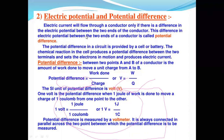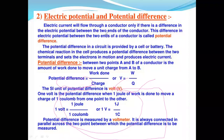Electric potential and potential difference: electric current will flow through a conductor only if there is a difference in the electric potential between the two ends of the conductor. This difference in the electric potential between the two ends of a conductor is called potential difference.